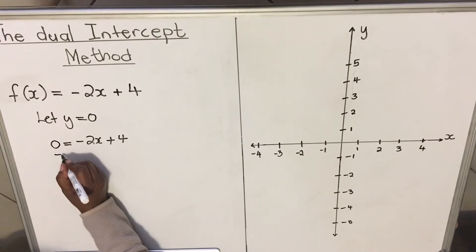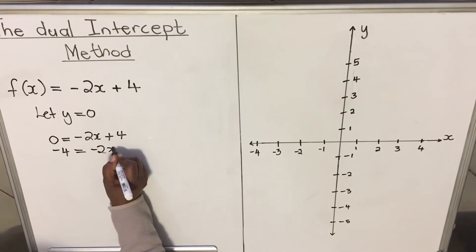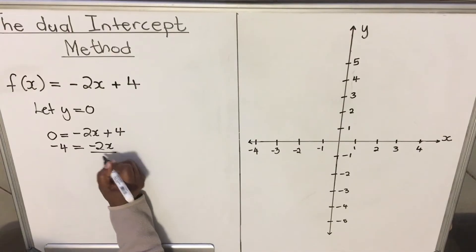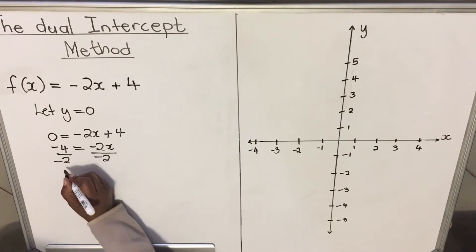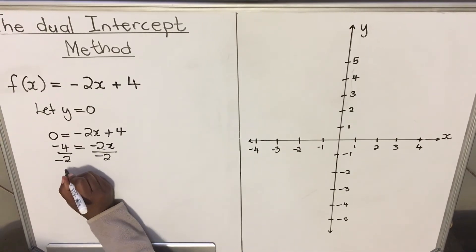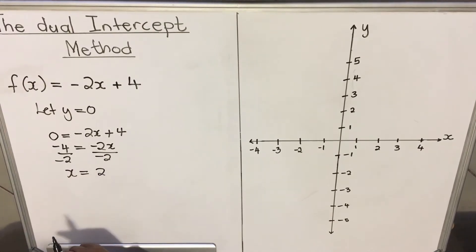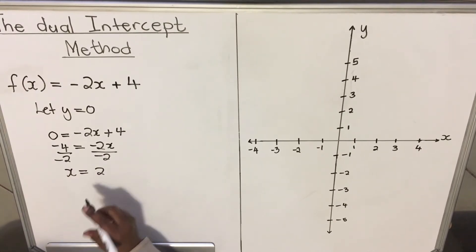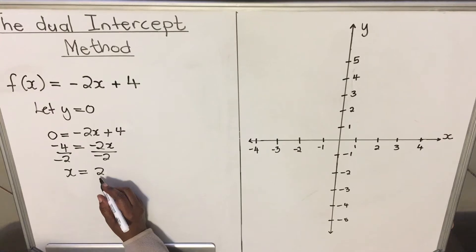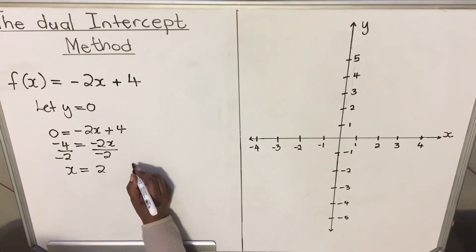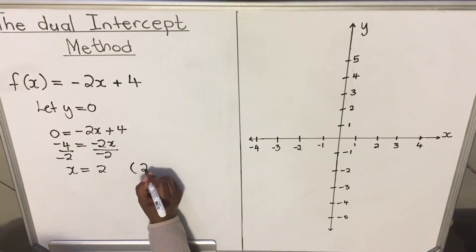We take the 4 to the other side: -4 = -2x. Divide both sides by -2, and x equals 2. So our y is zero and our x is 2. Written as a coordinate, the x-intercept is (2, 0).